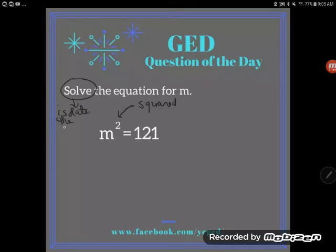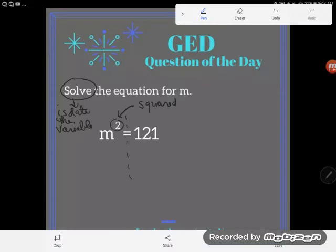I can see that this M is almost alone but not quite. The only thing on the same side of the equal sign with M is this little floating two, this square, and so that's what I have to get rid of.